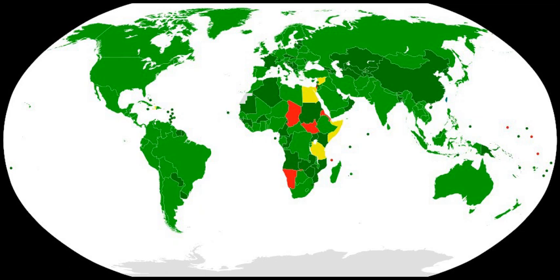v. With a view to enhancing international cooperation, assistance and exchange in biological sciences and technology for peaceful purposes, promoting capacity building in the fields of disease surveillance, detection, diagnosis, and containment of infectious diseases; for states parties in need of assistance, identifying requirements and requests for capacity enhancement; and from states parties in a position to do so, and international organizations, opportunities for providing assistance related to these fields. vi. Provision of assistance and coordination with relevant organizations upon request by any state party in the case of alleged use of biological or toxin weapons, including improving national capabilities for disease surveillance, detection and diagnosis and public health systems.